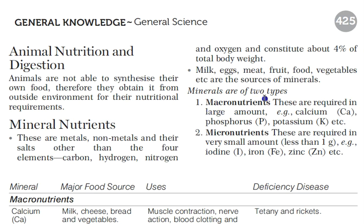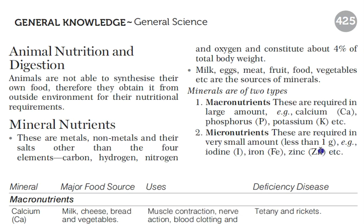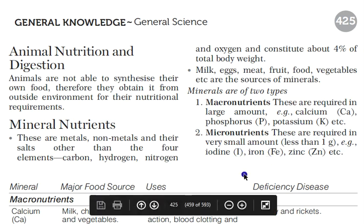Minerals are divided into two categories. First is macronutrients — macro means more — required in large amounts; for example calcium, phosphorus, and potassium. Micronutrients are required in very small amounts, less than 1 gram; for example iodine, iron, and zinc.